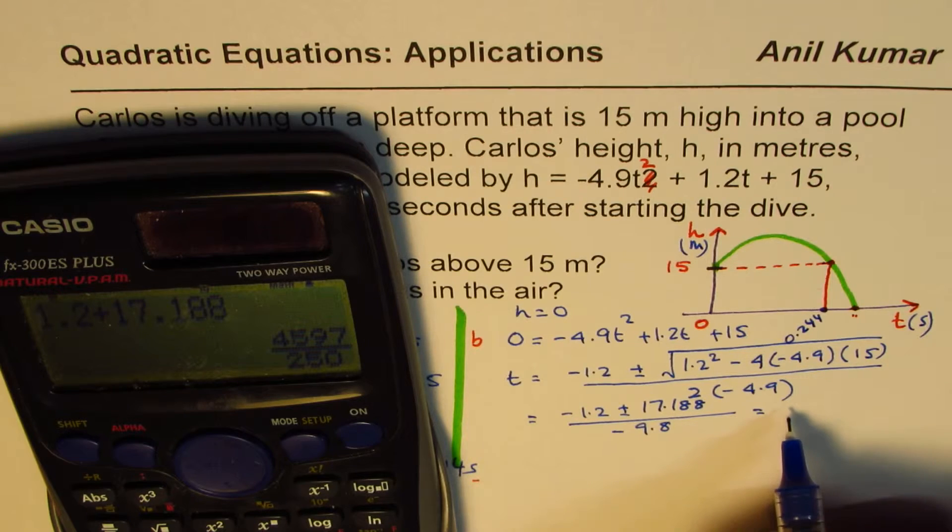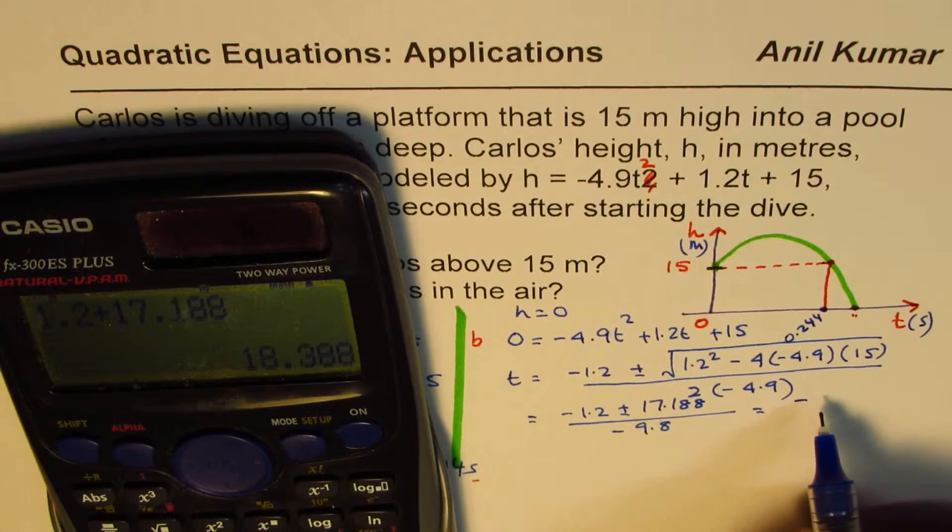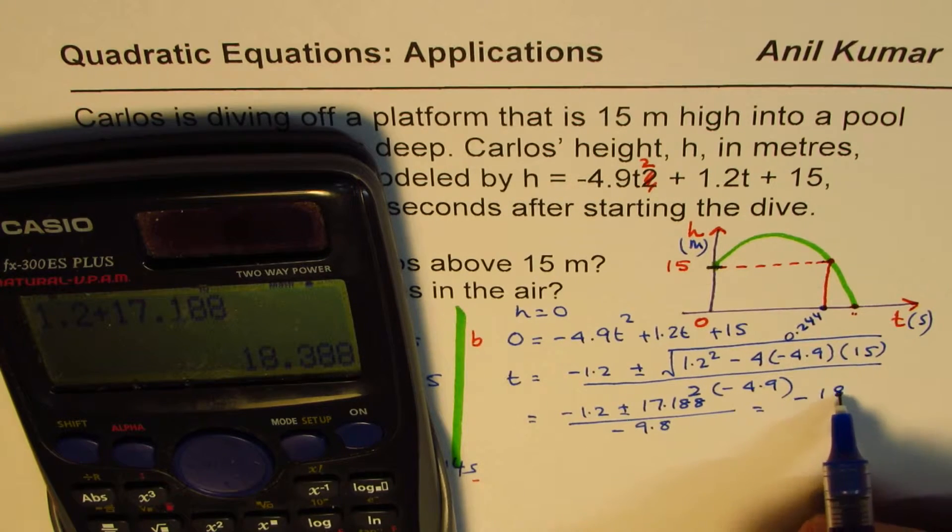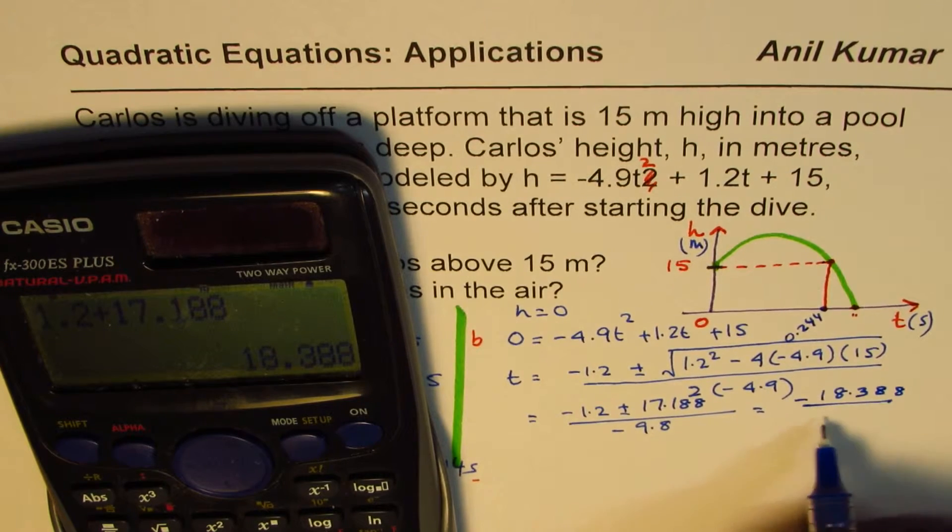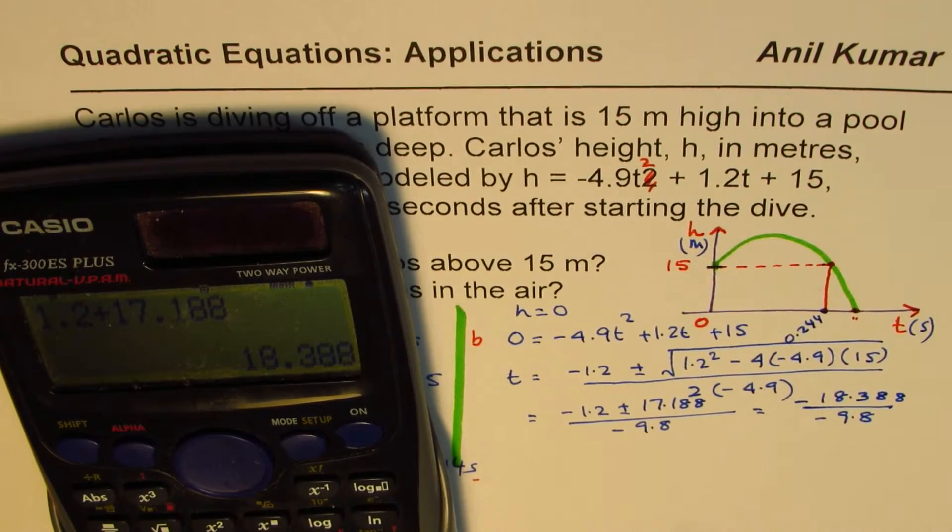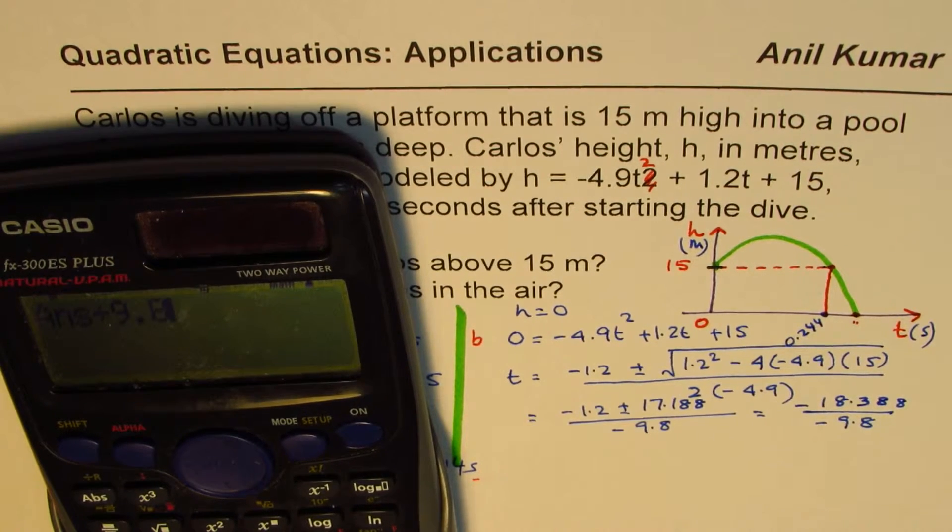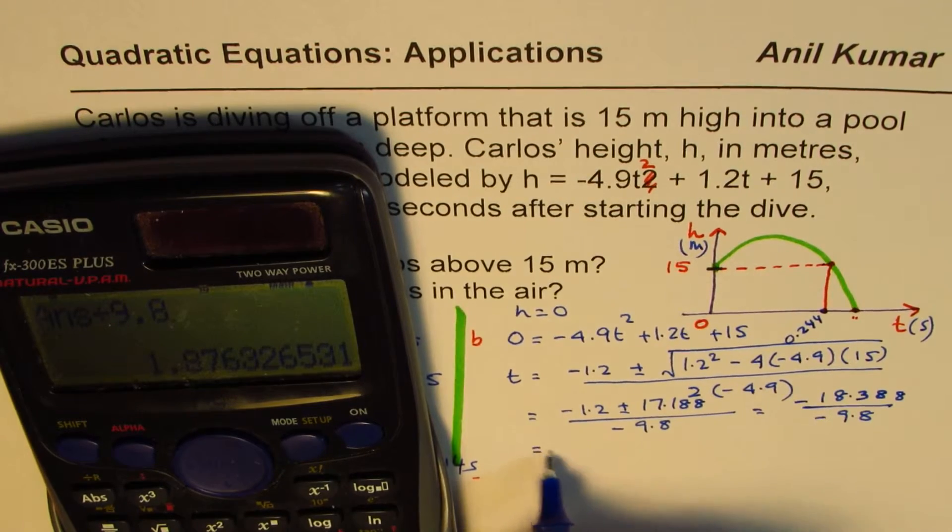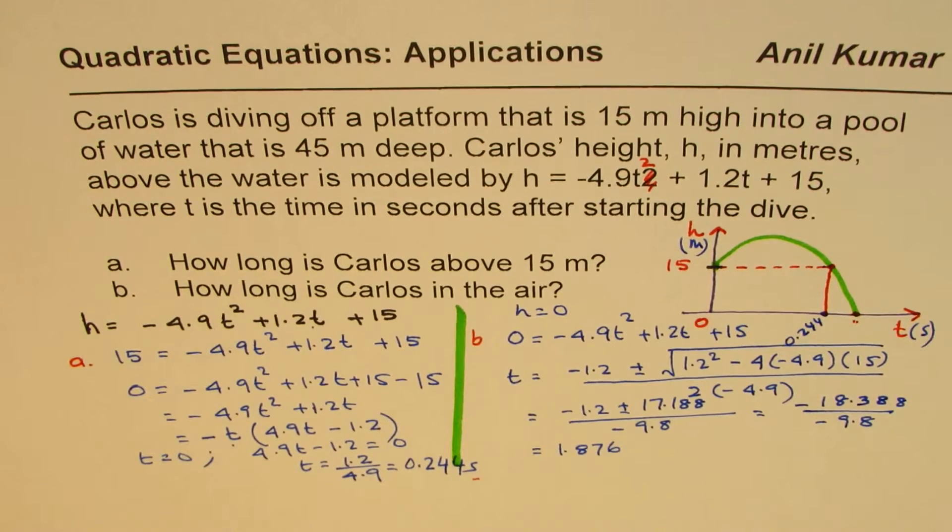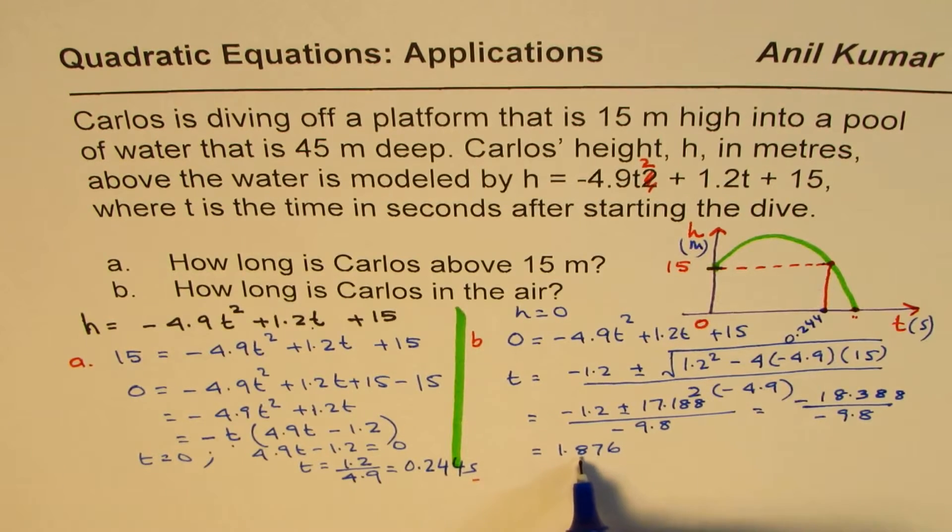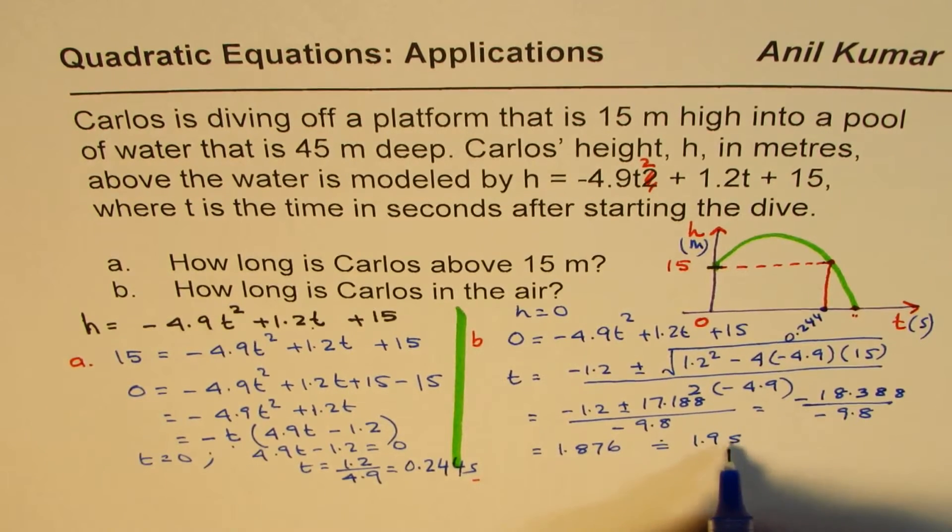So that gives us a decimal value. It is minus 18.388 divided by minus 9.8 to give us the time. We'll just divide this by 9.8, which gives us as equal to 1.876. So we get our time, which is around 1.9 seconds. You could approximate this to 1.9 seconds. And you could approximate this to 0.24 seconds. This time when you hit the water level is 1.9 seconds, approximately.